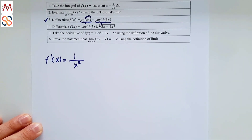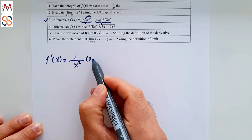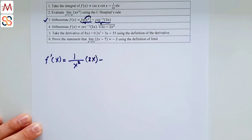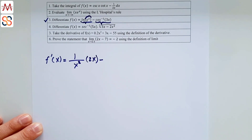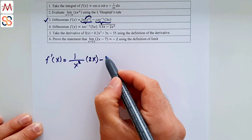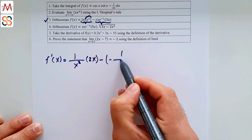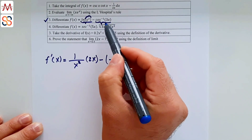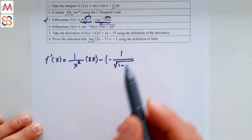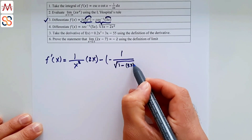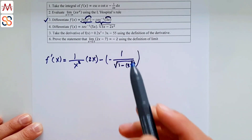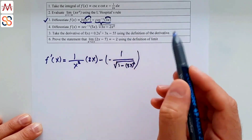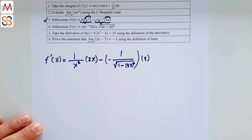For the second term, the derivative of arccos is -1/√(1 - u²). Here u = 3x, so we get -1/√(1 - (3x)²), and by the chain rule we multiply by the derivative of 3x, which is 3.